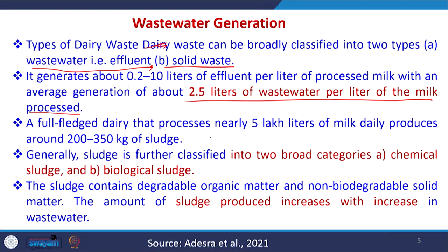A full-scale dairy that processes nearly 5 lakh liters of milk daily produces around 200 to 350 kg of sludge as well, which is a very large quantity. Sludge management in the dairy industry is also very important. Sludge is classified into two broad categories: chemical sludge and biological sludge, containing both degradable organic matter and non-biodegradable solid matter.